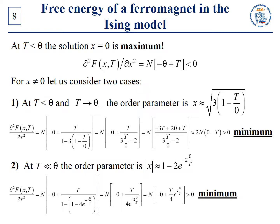In this case, d²F/dx² is less than zero. For x not equal to zero, let us consider two cases for which we already know the approximate analytical expressions for the order parameter. The first case: T less than theta and T tending to theta from the left. The second case: T much less than theta. We earlier obtained that at T less than theta and T tending to theta from the left, the order parameter was expressed accordingly. Therefore, in this case, d²F/dx² is greater than zero — so this is the minimum.